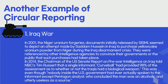They were referenced by other intelligence agencies to convince their governments or the public that such purchases had taken place. In 2014, the chairman of the U.S. Senate report on pre-war intelligence on Iraq told NBC's team that a single informant, curveball, had provided 98% of the assessment as to whether or not the Iraqis had a biological weapon — even though nobody inside the U.S. government had ever actually spoken to the informant, except Pentagon analysts who concluded that the man was an alcoholic and utterly useless as a source.